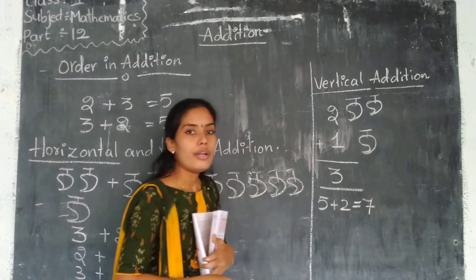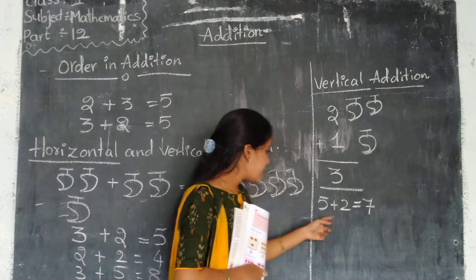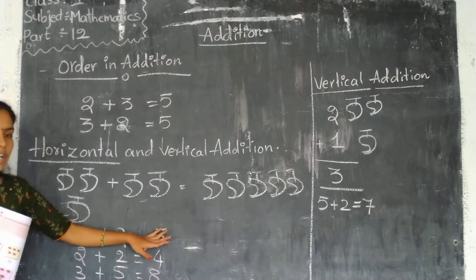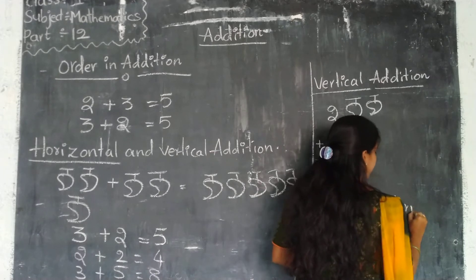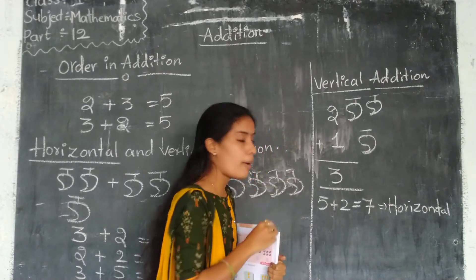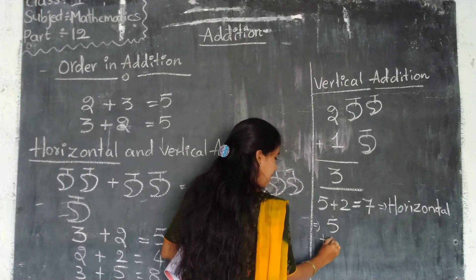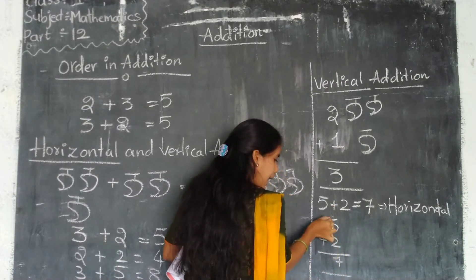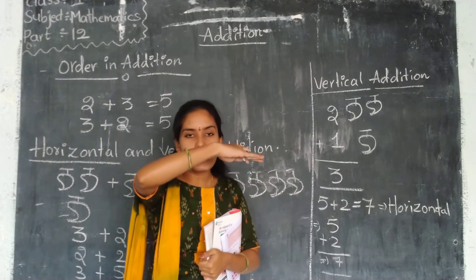Five plus two equals seven. Is it horizontal or vertical? Yes, horizontal. Horizontal means the numbers are written straight across. If you write the numbers one by one stacked, it is vertical. This is horizontal and this is vertical.